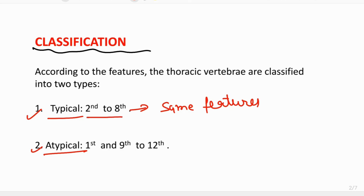The atypical thoracic vertebra are the first, ninth, tenth, eleventh, and twelfth. These are the atypical vertebra, meaning they are having some different features, that's why they are different from the typical thoracic vertebra.